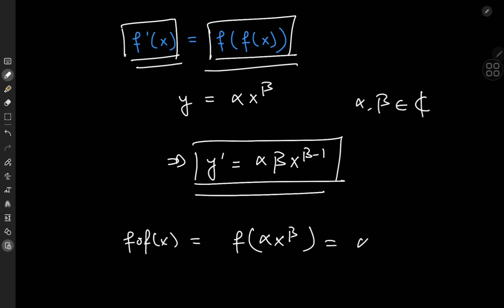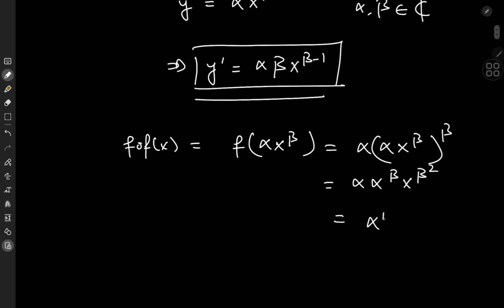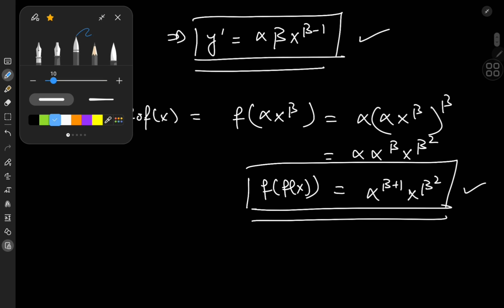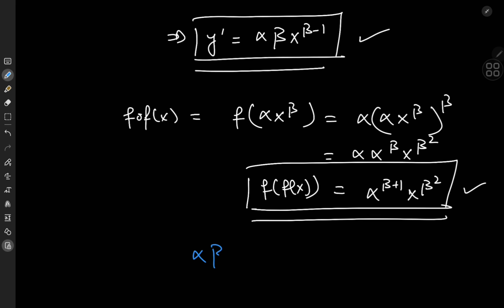So that gives me alpha times the replaced x term — the function itself — which works out to alpha times alpha to the beta times x to the beta squared, or simplifying: alpha to the beta plus one times x to the beta squared. That is f of f of x. According to the differential equation, the derivative and this composition must be equal, so: alpha times beta times x to the beta minus one equals alpha to the beta plus one times x to the beta squared.